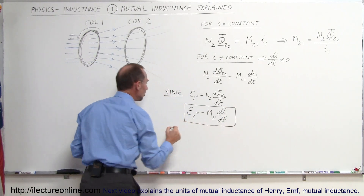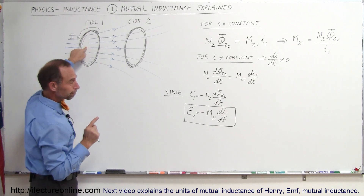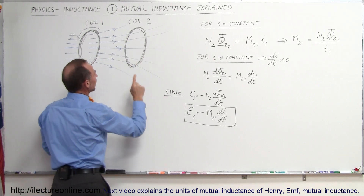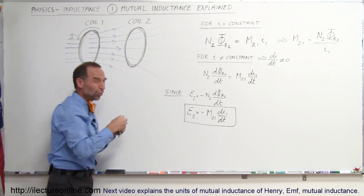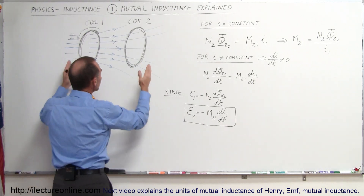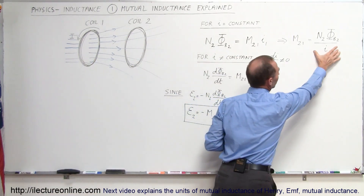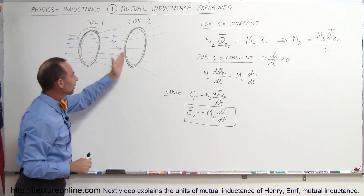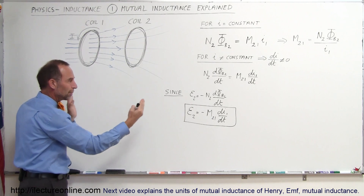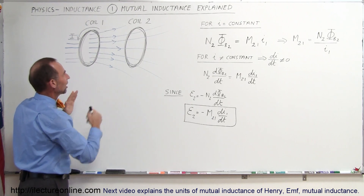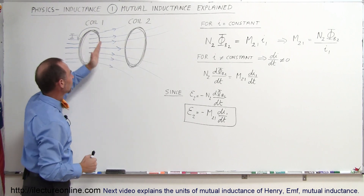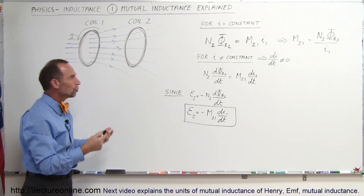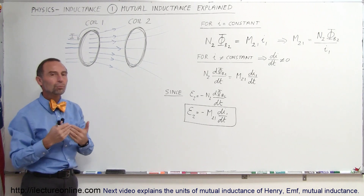By changing the current in the first loop, we can determine the effect on the second loop: the EMF induced in the second loop — which will drive a current there — equals the mutual inductance M between the two coils times how fast the current is changing in the first loop. Mutual inductance captures the geometric relationship, the shapes, and how much flux from the first loop passes through the second loop. From that, we determine how much EMF is produced or induced in the second loop.